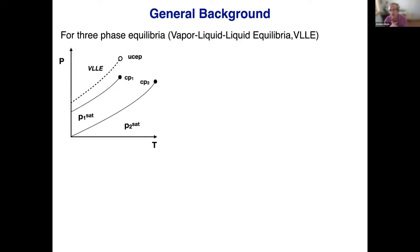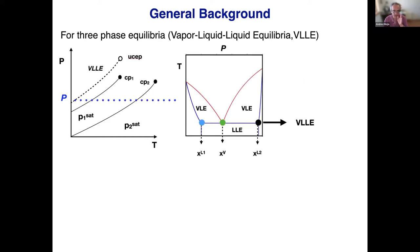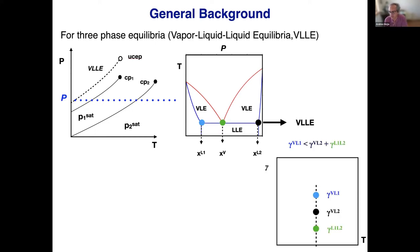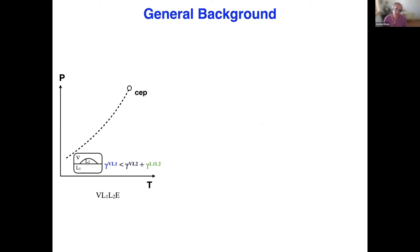For three-phase equilibrium — for example, vapor-liquid-liquid equilibrium — we have different tensions related to the surface tension and both phase equilibria. If you fix the pressure, we have two vapor-liquid equilibria, one liquid-liquid equilibrium, and the connection between them at the vapor-liquid-liquid equilibrium where we find three different tensions: vapor with liquid one, vapor with liquid two, and liquid-liquid. This situation can be visualized in the Clapeyron diagram.